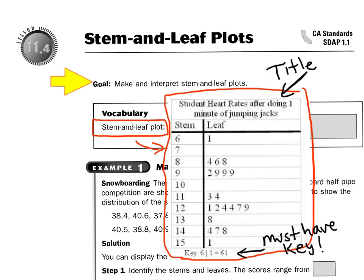In this case, 6 bar 1 means 61. They're talking about student heart rates after doing one minute of jumping jacks, so this kid had a heart rate of 61. Now, 8 bar 4 would be a heart rate of 84, 8 bar 6 would mean 86, and 8 bar 8 would mean 88, and so on.